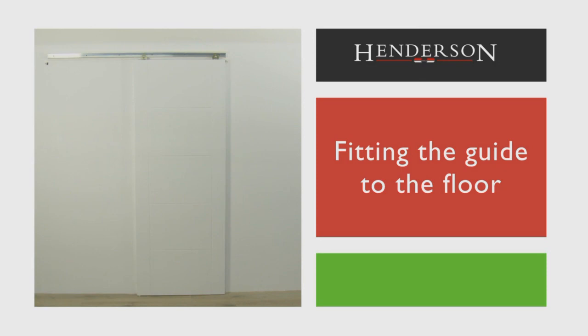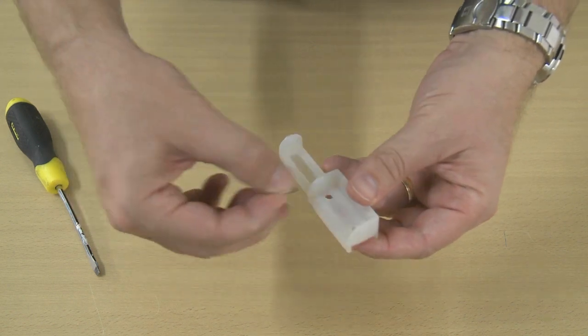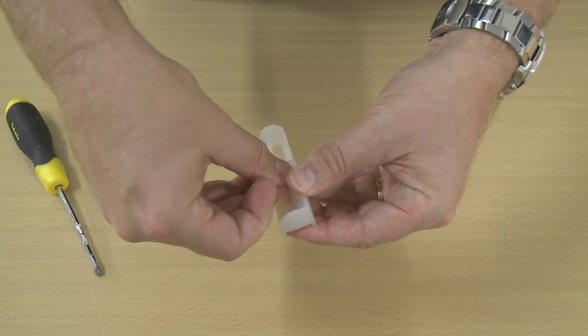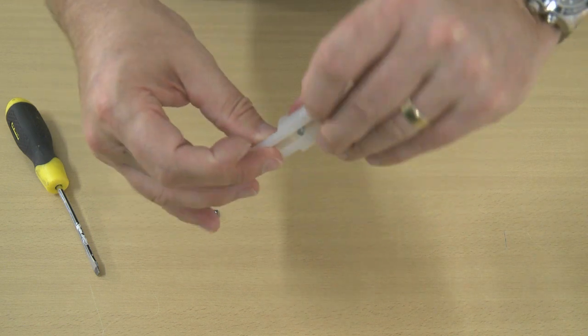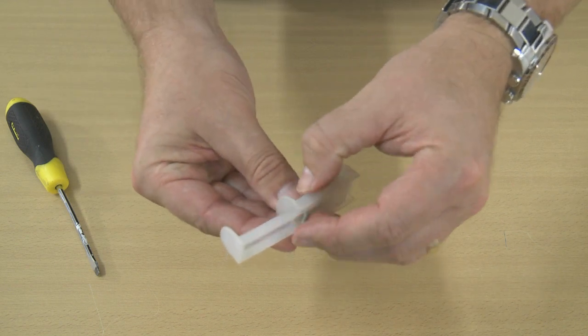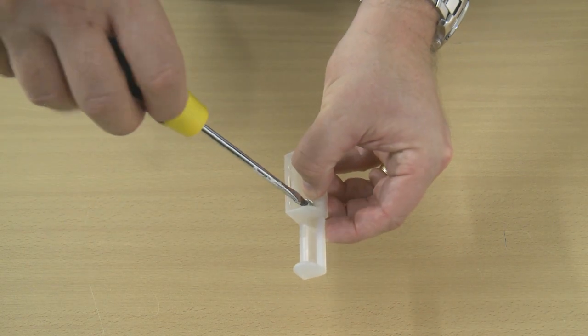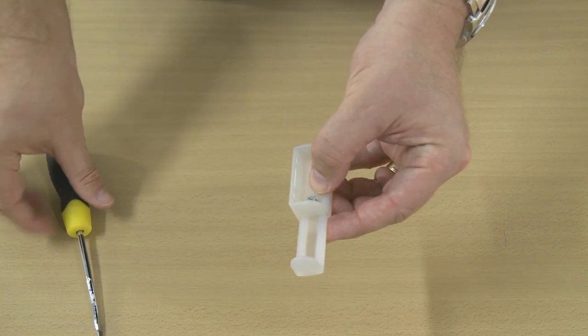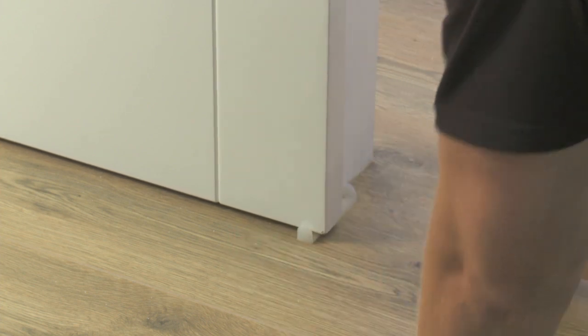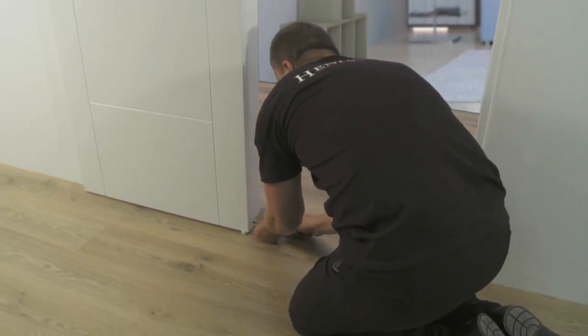Fitting the guide to the floor. Once the door is in place, we need to fit the floor guide. Assemble the guide as per the instructions. Position the guide under the door and on the floor against the door, use the jam frame and mark out the pilot hole positions. Drill the pilot holes with the electric drill if necessary.